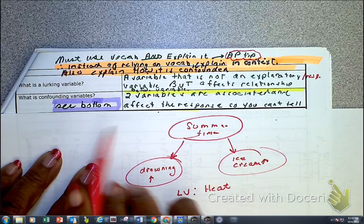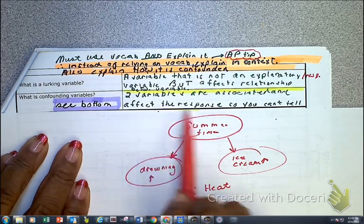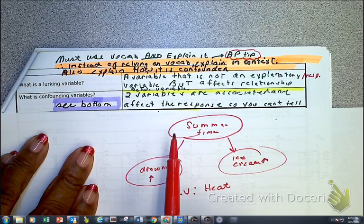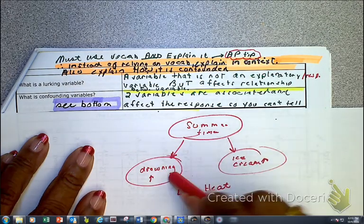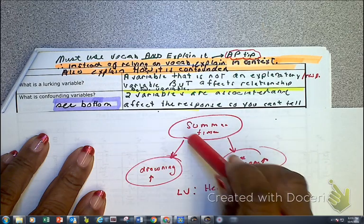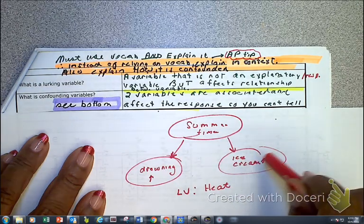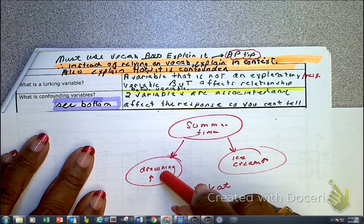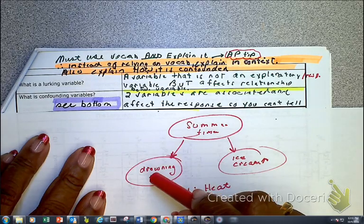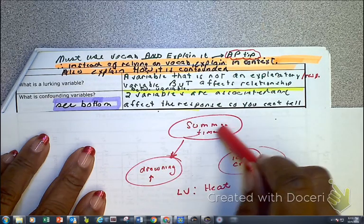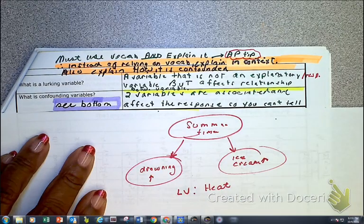This picture I just showed you was a picture of a confounded variable. Confounded variables are two variables that are associated and affect the response. We can see these are confounded — these two are associated, and these two are associated. Drowning does not cause ice cream sales to increase, nor does ice cream sales increasing affect drowning. But summertime causes the drowning and summertime causes ice cream sales to increase. This is a prime example of a lurking variable.